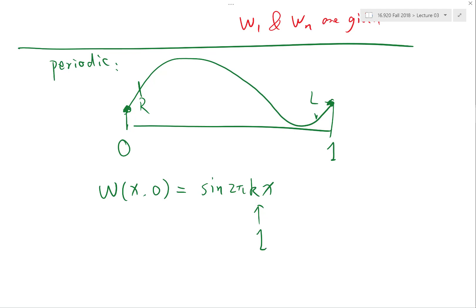So before we do anything, can somebody tell me: do you expect the solution to be more or less accurate for smaller k or bigger k?